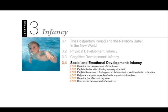The initial pre-attachment phase runs from birth to three months, and it's indiscriminate attachment — the baby will latch on to anybody. During the third and fourth months, you have attachment in the making, where the infant starts to show preference for familiar figures like the parent. Around six or seven months, you have the clear-cut attachment phase, which is an intensified dependence on the primary caregiver, usually the mother.